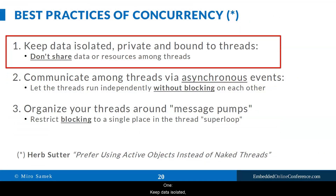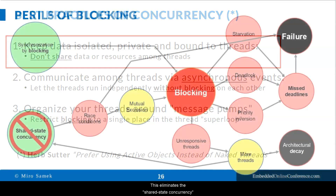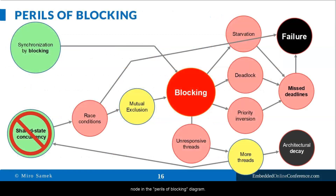Best practice number one: keep data isolated, private, and bound to threads. This means avoid sharing of data or resources among threads. This eliminates the shared-state-concurrency node in the Perils-of-Blocking diagram. Without sharing, there is no need for mutual exclusion, and a big part of the vicious cycle is eliminated.